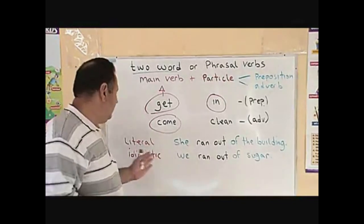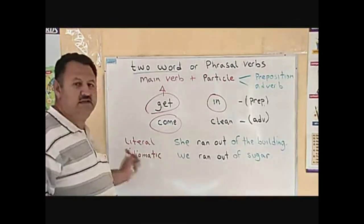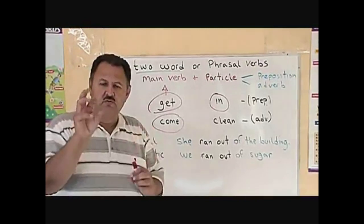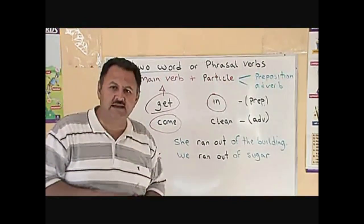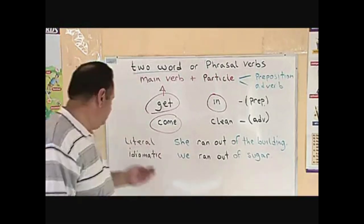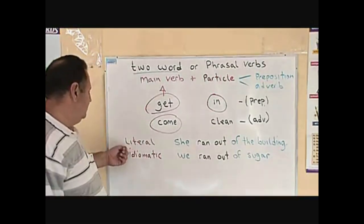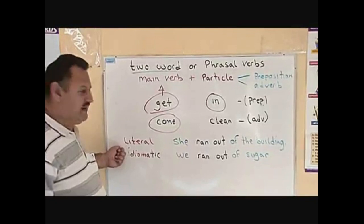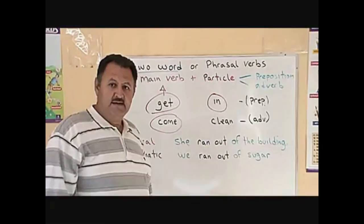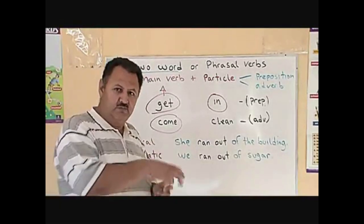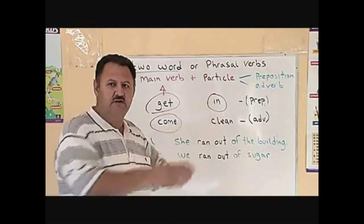Now, when we see, sometimes we see a verb and a preposition and it has a literal meaning. Look at this example: she ran out of the building. That means she literally ran out of the building.